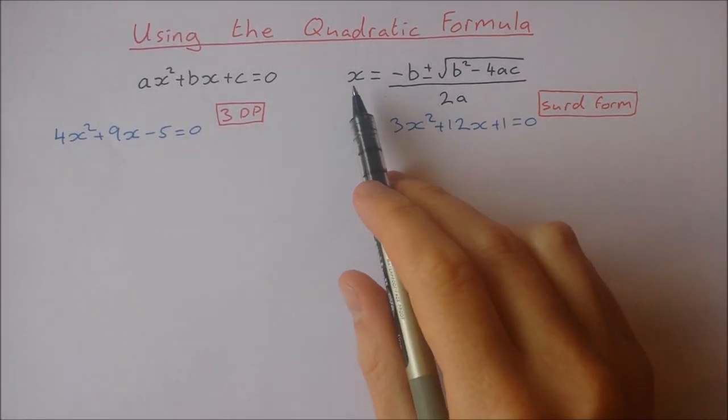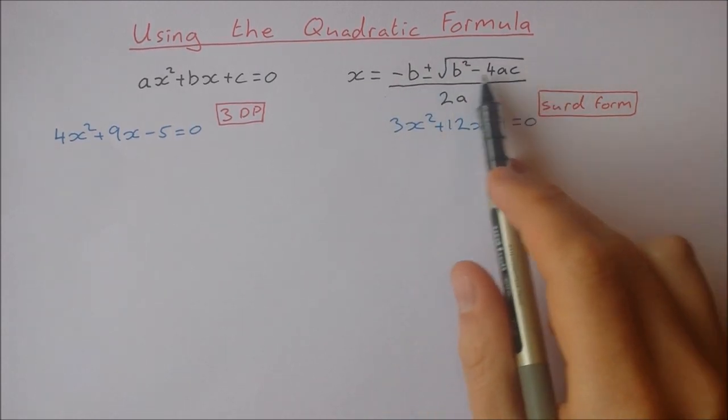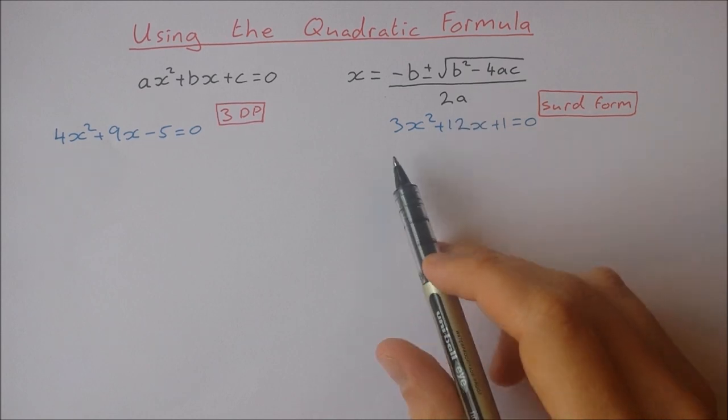The quadratic formula, hopefully you recognise it, is x equals minus b plus and minus the square root of b squared minus 4ac all over 2a.